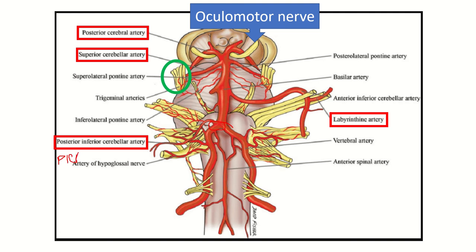The posterior inferior cerebellar artery is a branch of the basilar artery. As we ascend, we can see smaller branches going to the pons — these are the pontile branches. There is also the labyrinthine artery, which is a branch of the pontile artery and goes to the middle and inner ear to supply them.